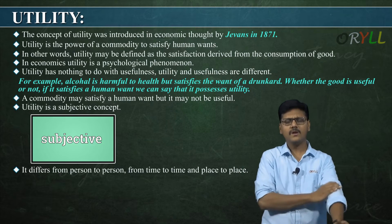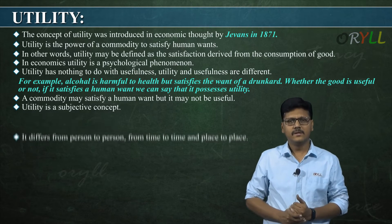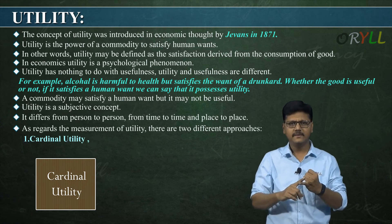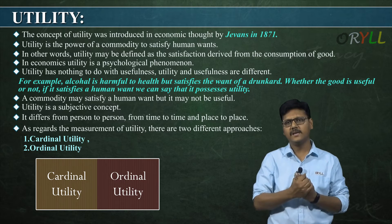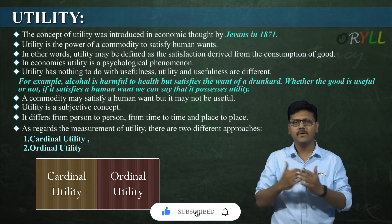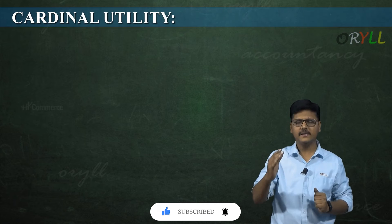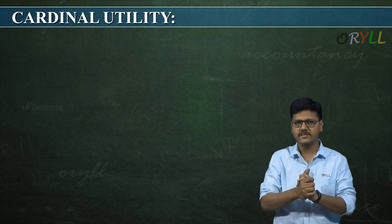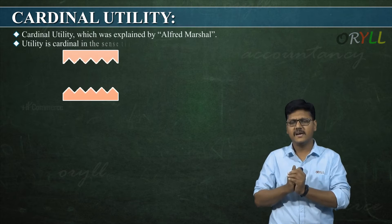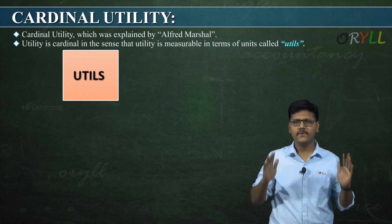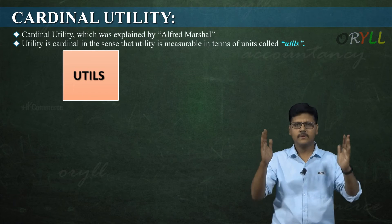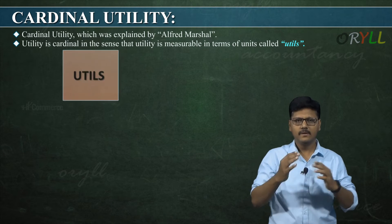Utility can be measured in two ways: cardinal utility and ordinal utility. Cardinal approach is given by Alfred Marshall and ordinal approach is given by Hicks and Allen. According to cardinal utility analysis, utility is measurable in terms of units called utils. Marshall says utility can be measured in terms of numbers — 1, 2, 3, 4 — expressing satisfaction levels numerically.